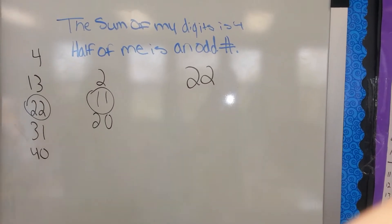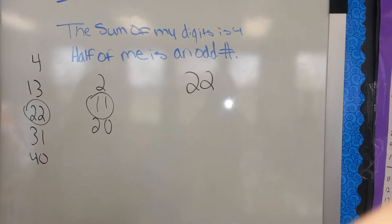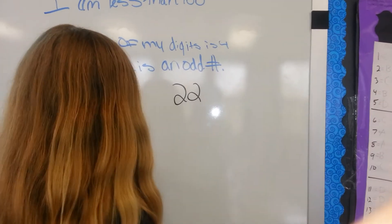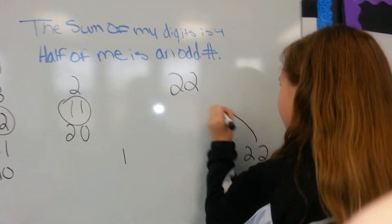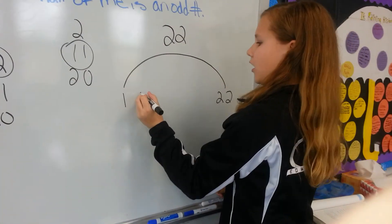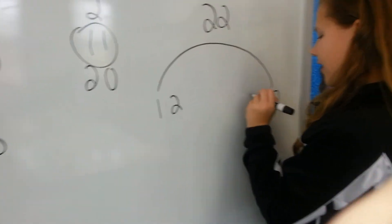So, now we have to draw the little factor rainbow thingy. We're going to start out with 1 and 22. And then we're going to go 2 and 11.